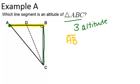But let's look at the other segments as well. If we think about AB as being the base, then the altitude from AB would be a line that's perpendicular to AB and goes through the point C, which is the opposite vertex. So that would be the segment BC.